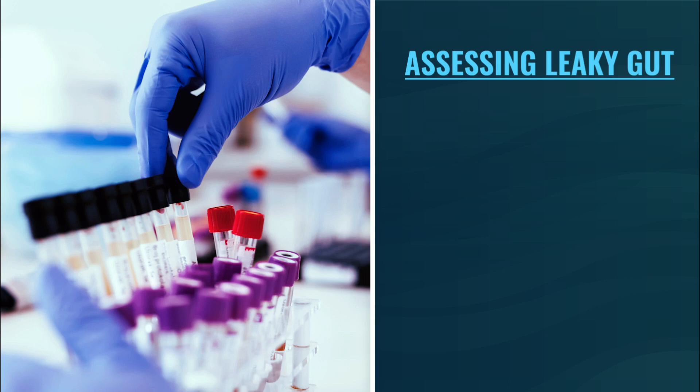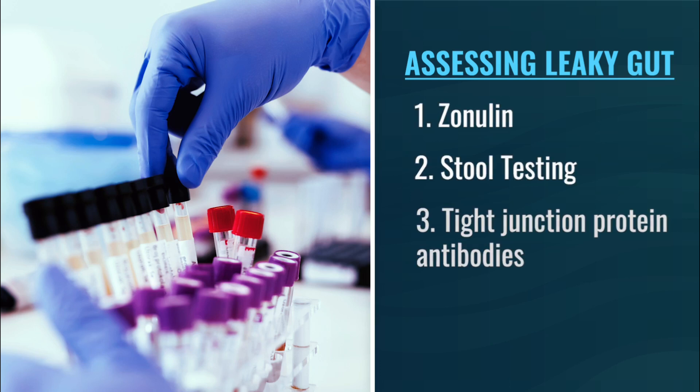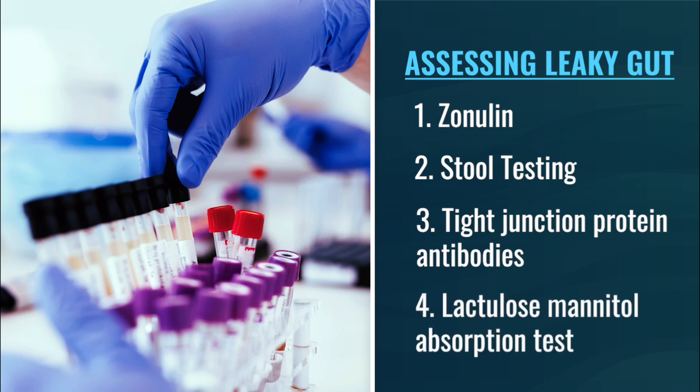This brings up the question: if I have these symptoms and I think leaky gut might be implicated, how can I assess? That's what I want to break down and cover today. We'll look at the four main ways of assessing leaky gut: zonulin, indirectly through stool assessments, through tight junction or leaky gut barrier proteins, and also through what's known as the lactulose mannitol absorption test.